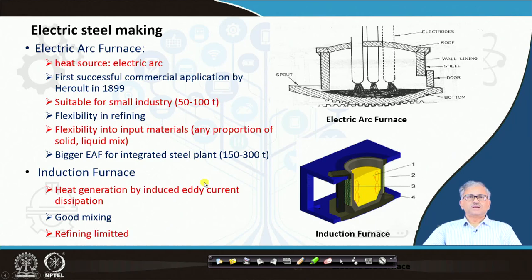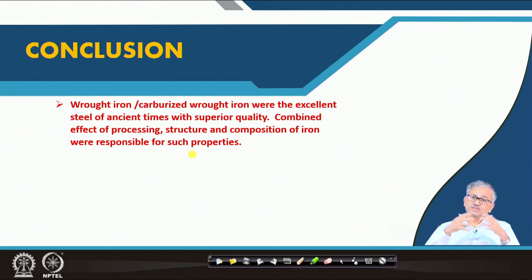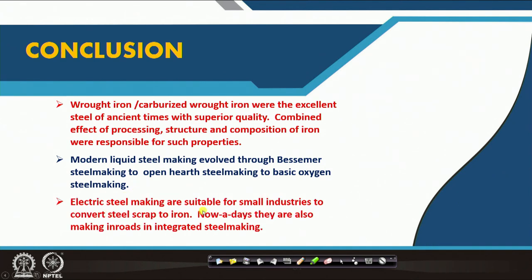So there are two types of electric steel making: the electric arc furnace and the induction furnace. In conclusion: wrought iron and carburized wrought iron were excellent steels in ancient times with superior quality. The combined effect of processing, structure, and composition of the iron is responsible for the very excellent quality of those steels — very corrosion-resistant, and then the Wootz steel. Modern liquid steel making evolved through Bessemer to open hearth to basic oxygen steel making. Electric arc steel making is also suitable for small industry to convert scrap to liquid steel. Nowadays, larger electric arc furnaces are making inroads to integrated steel making — they have flexibility in raw materials, can take any proportion of liquid steel with cold charges like scrap or DRI. Thank you very much.